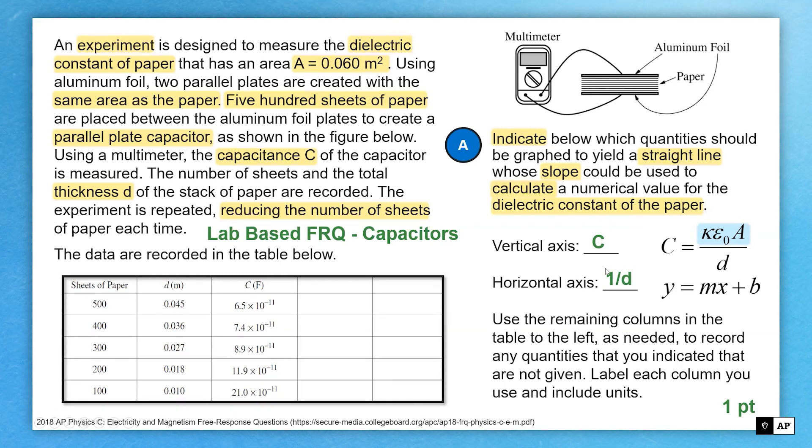Could you flip it around? Sure. As long as it's something that would still give you a linear slope based on this equation, you'd be in good shape. So this is just one example of the way that I'm hopping through. One note here, it says use remaining columns for any additional work you might do.